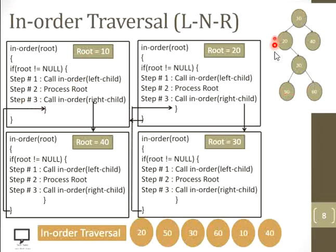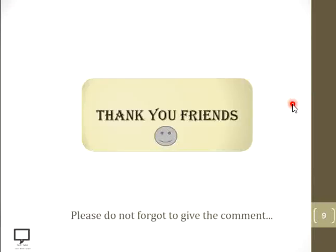We have done with all the nodes, and the in-order traversal result is: 20, 50, 30, 60, 10, 40. In this way we have traversed the tree with recursion and in-order. Thank you dear friends for listening and watching my video. If you like the content and the video, please do not forget to give a comment. I am providing you the subscription link — please do subscribe my channel Tech Talks — along with the shortcut link for the next video and the playlist for this tree data structure series. Thank you and stay tuned with Tech Talks.